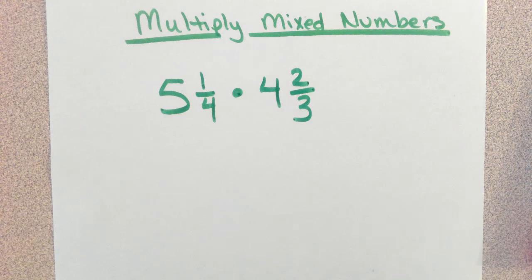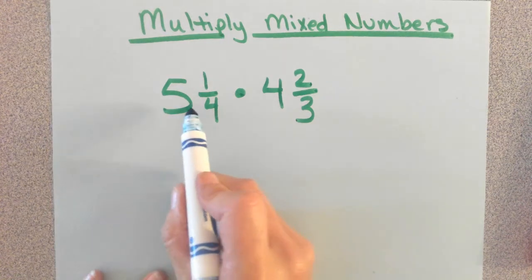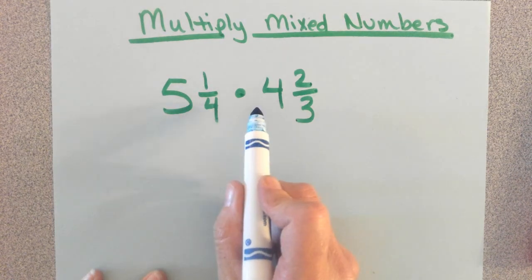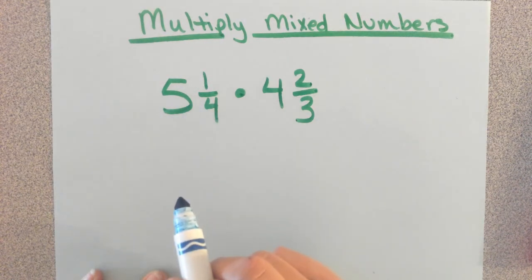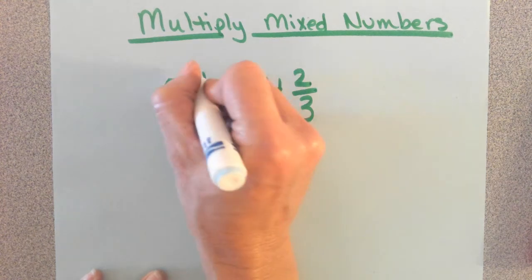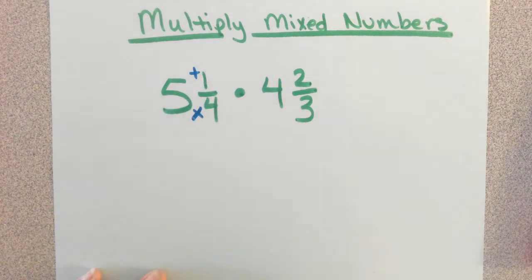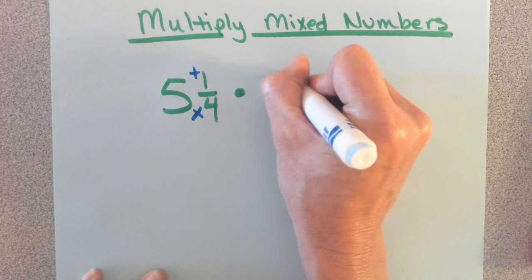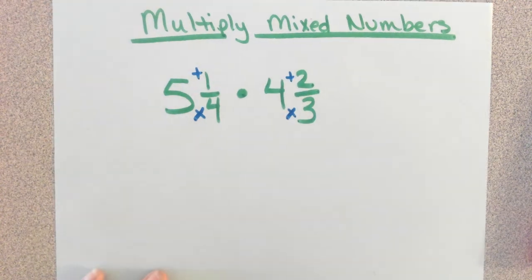Now, multiplying fractions ain't no problem. It's a tops times a tops and a bottom times a bottom. However, these fractions have whole numbers mixed in, so you cannot do tops and bottoms. You have to do the Texas two-step to make an improper fraction that only has a numerator and a denominator.